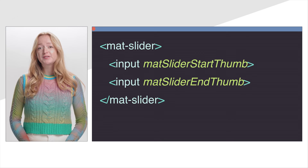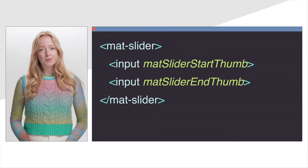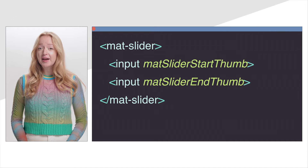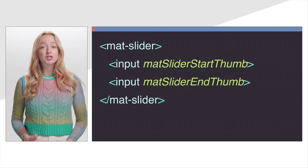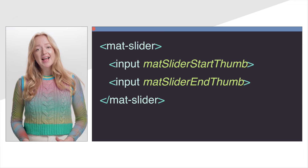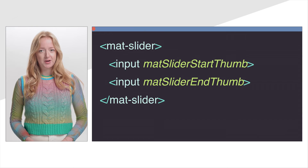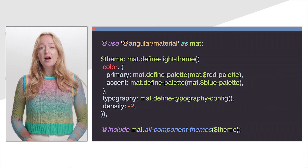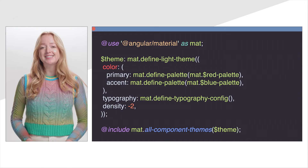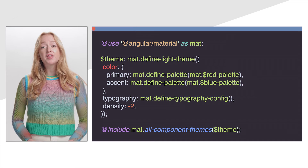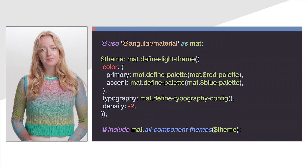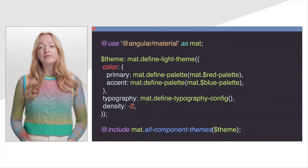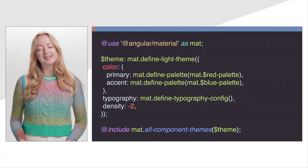We also resolved the fourth most upvoted issue: range selection support in the slider. To get a range input, use mat-slider-start-thumb and mat-slider-end-thumb in your slider inputs. Additionally, all components now have an API to customize density, which resolved another popular GitHub issue. You can now specify the default density across all of your components just by customizing your theme.